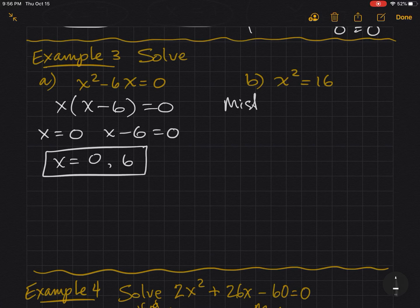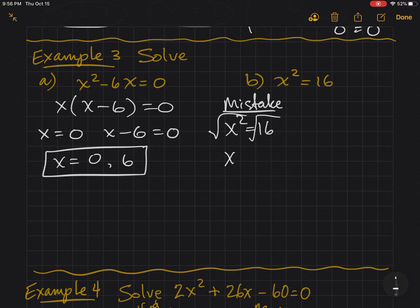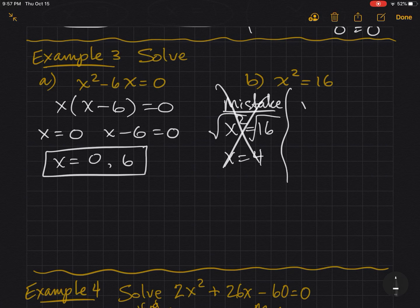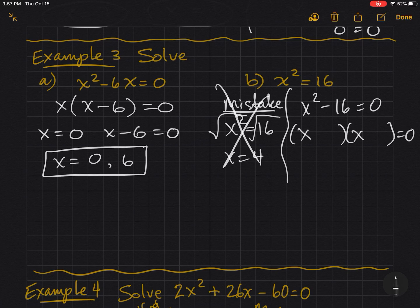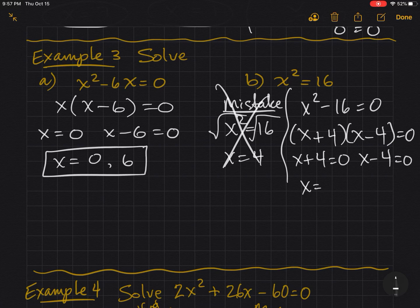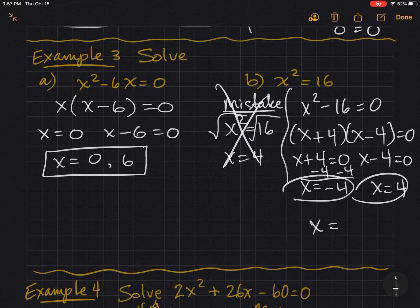The common mistake that students make on part B is to just say, oh, I can take the square root of both sides. x equals 4. Well, you're half right. Don't do it that way, because you missed one of your answers. What you want to do is put everything on one side. So subtract 16 from both sides. And now remember the difference of two squares. So square root, square root of 16 is 4. Make 1 positive, 1 negative. And now using the zero product property, I can quickly see that I get x equals negative 4 or x equals positive 4. You can write them separately, or you can get fancy and do plus or minus 4. Either way is fine with me.